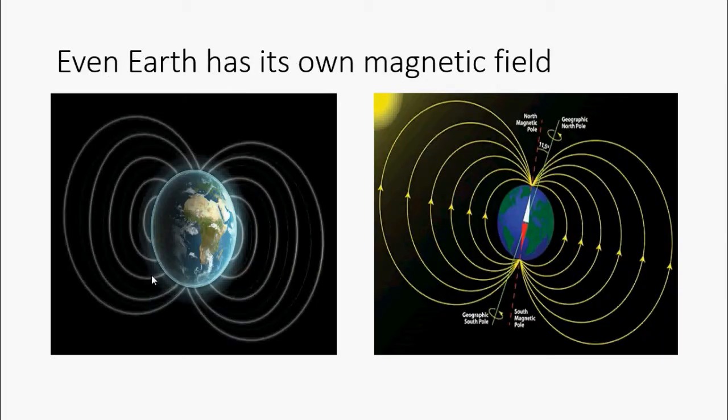Even Earth has its own magnetic field. Earth's magnetic field is also known as the geomagnetic field and is the magnetic field that extends from Earth's interior.